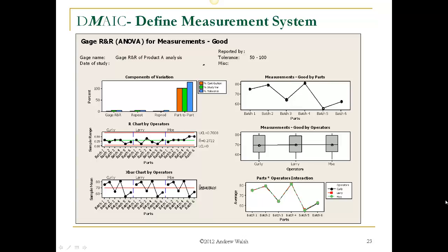Summarizing this good gauge R&R: components of variation show most contribution from part-to-part — a good thing. Measurements by parts show data points closely grouped, with averages moving — you're watching the movement of the product, not instrument or analyst variation. Measurements by operators show identical box-and-whisker plots with a straight average line. Parts-by-operator interaction shows data points stacked on top of each other. The X-bar chart has control limits so tight you can barely read them. The R chart has all data points within control limits. This is a very good gauge R&R result.